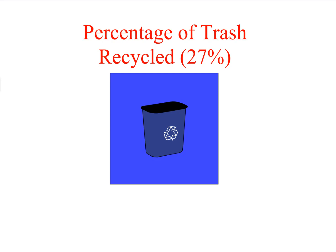I'm using a hundredths grid here. This square with the recycling bin represents 100, or a whole. I'm going to color in 27 squares on my whole — here is a bar of 10, another bar of 10 which makes 20, and a bar of 7 which makes 27. So what that means is 27% is 27 out of 100.